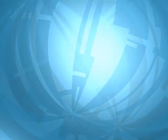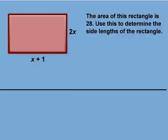Let's look at another example. The area of this rectangle is 28. Use this to determine the side lengths of the rectangle. We are given three pieces of information: the length of the rectangle, the width, and the area of the rectangle.